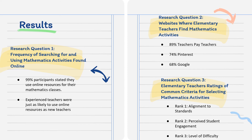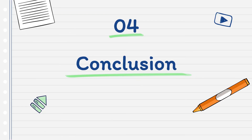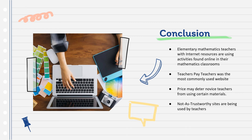For the third research question, teachers were asked to rank the importance of criteria when selecting elementary math activities online. The most important criteria was alignment to standards, followed by perceived student engagement and level of difficulty. The lowest-ranked criteria were price, visual appeal, and user rating. However, teachers with less experience ranked price as more important than more experienced teachers did.